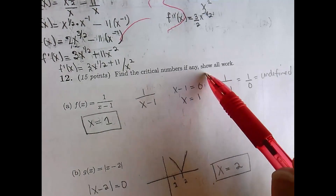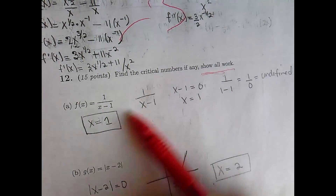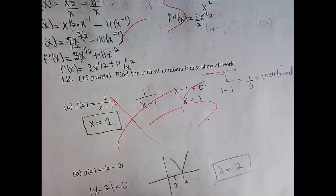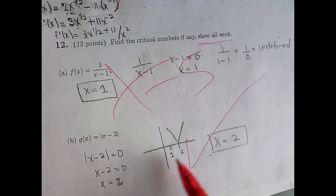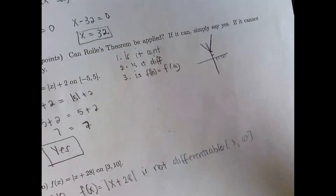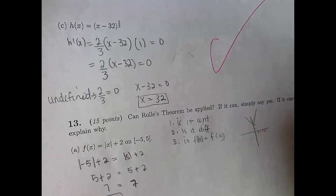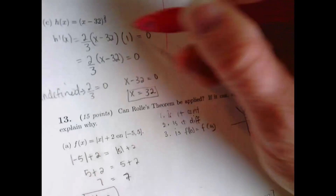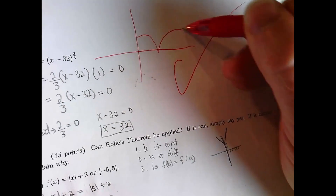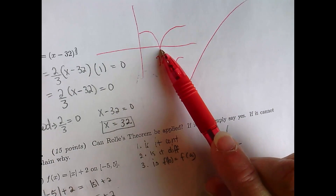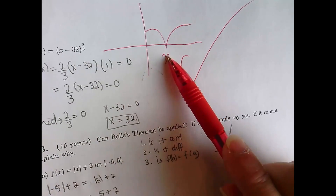We want the critical numbers. There are no critical numbers here — that's correct. Two is a critical number — it has a sharp edge. This one has a critical number here — it's a cusp. If you graph it, it looks like a little bird. It's not differentiable there, but that number is in the domain of the function, so it actually is a critical number.